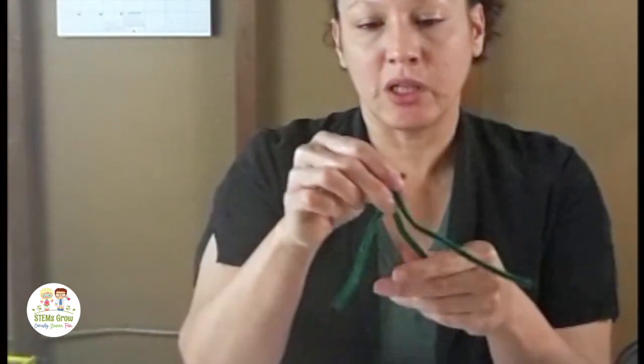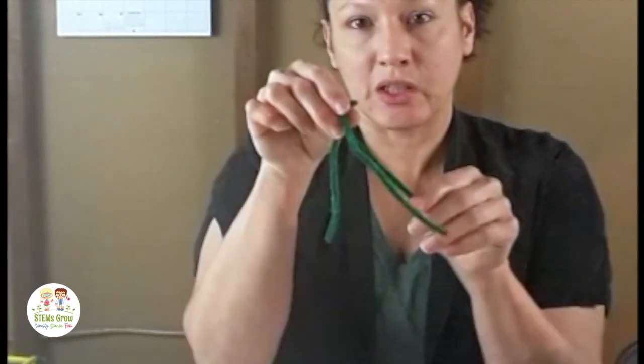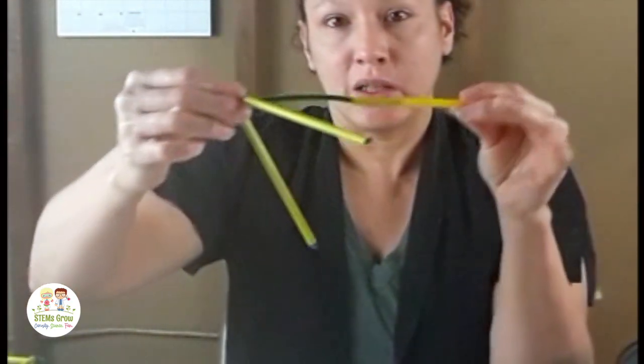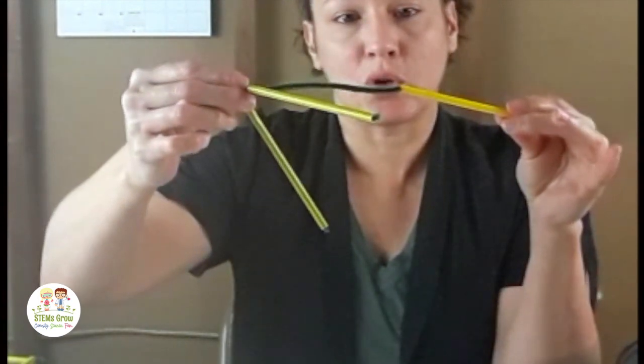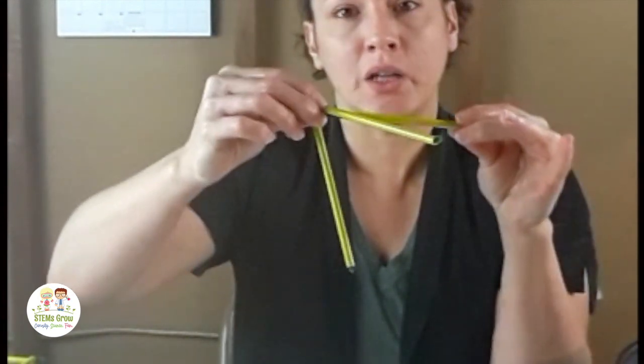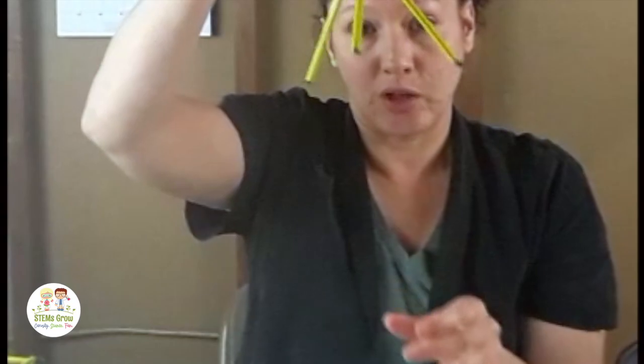Once we get all the pieces that we need, we put three pipe cleaners together like a tripod, and do that four times. So you will have four of these, and then you slide the pieces of straw onto the legs of each of these tripods. You should have four of these.